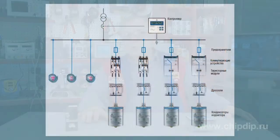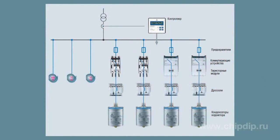Power factor correction systems are designed to enable efficient use of power by decreasing the idle current flowing through the grids. Today we will look at the main power factor correction formulas.